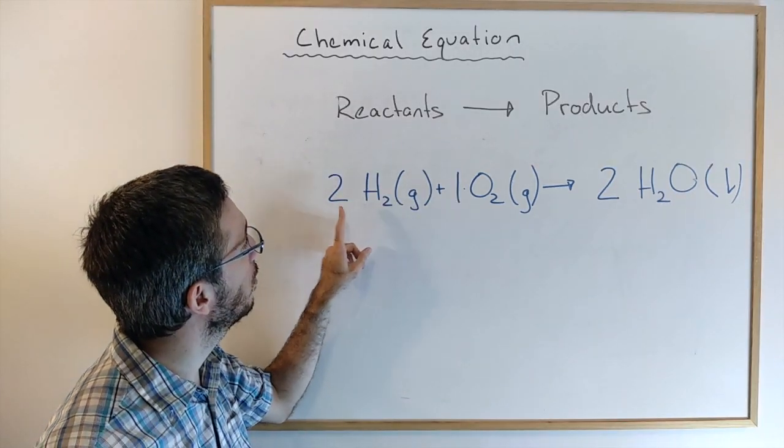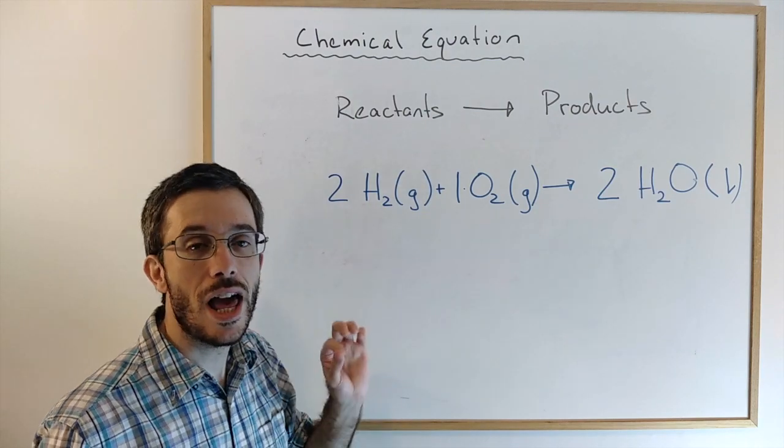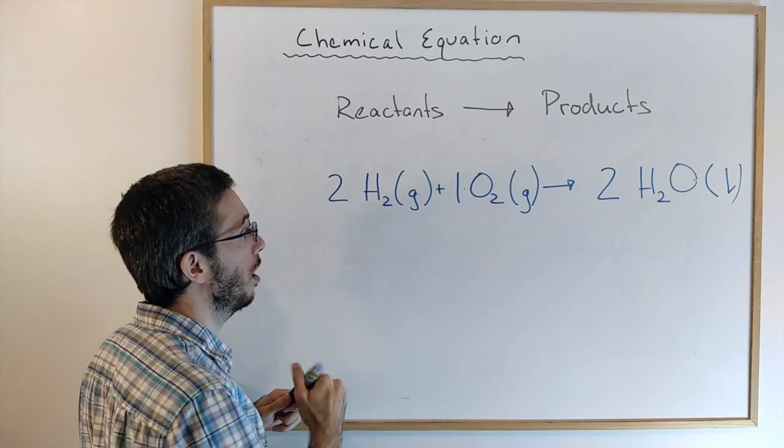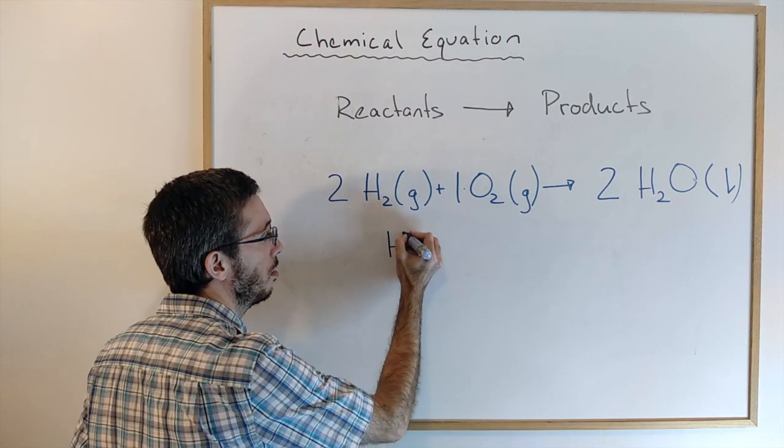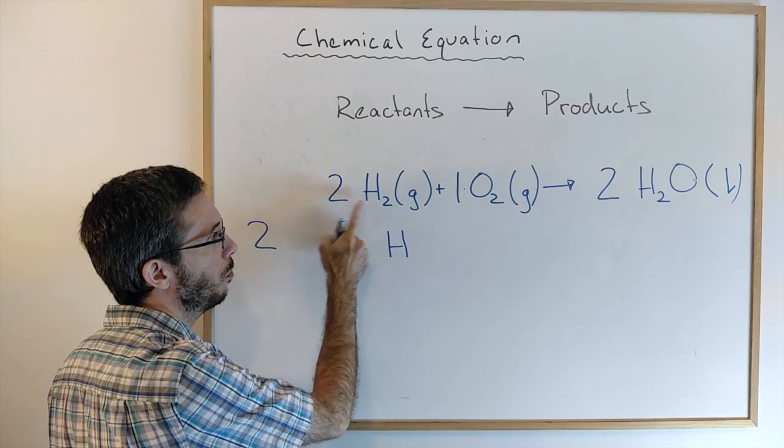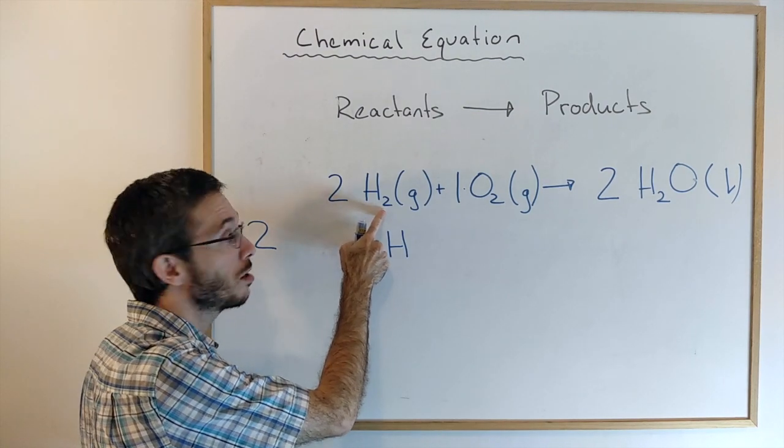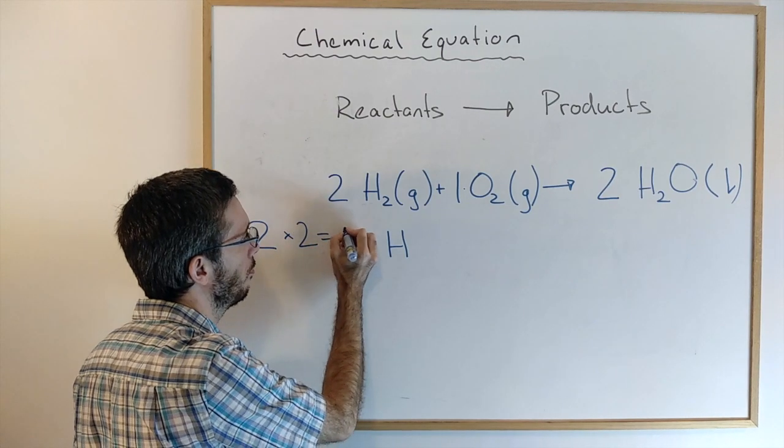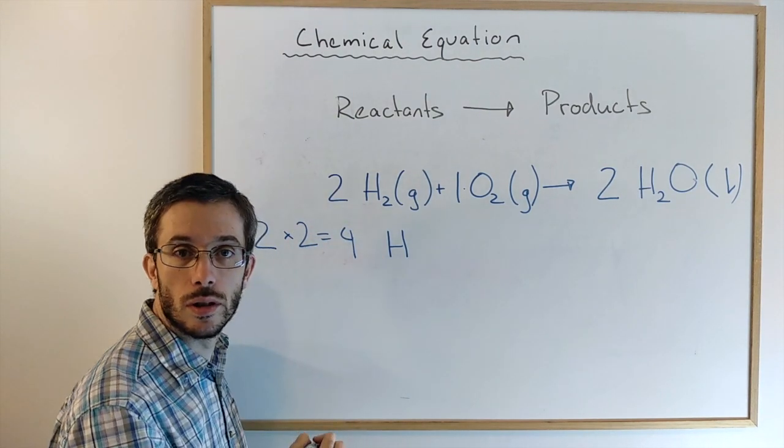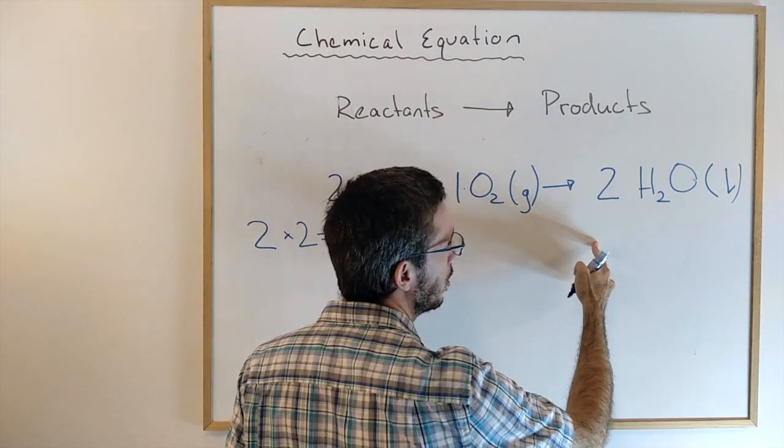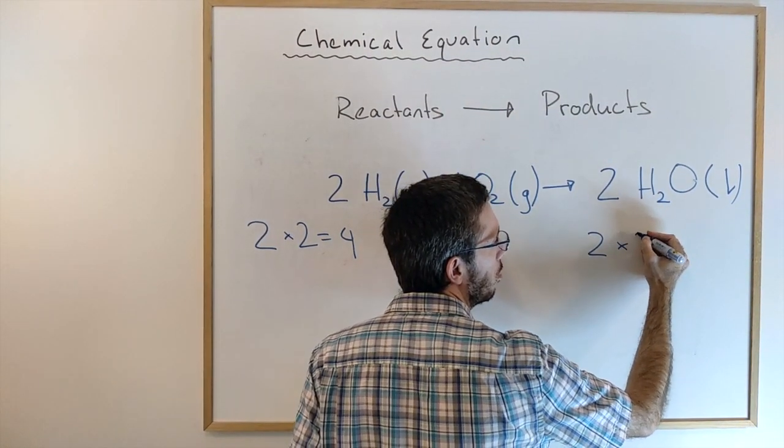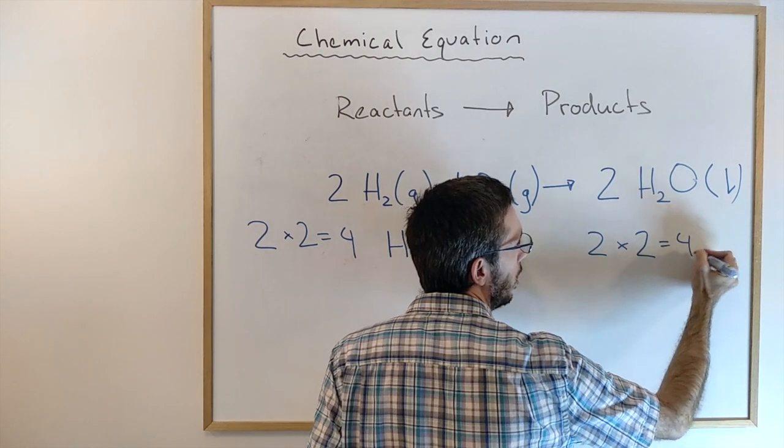Also, the number of atoms of each element is conserved. If we're looking on the left side, how many hydrogen atoms I have. So I have two molecules of hydrogen, which each molecule has two atoms of hydrogen. So 2 times 2 is 4 hydrogen. How many hydrogen do I have on the right? I have two molecules of water. In each water molecule, there are two hydrogen atoms, so 4 hydrogen.